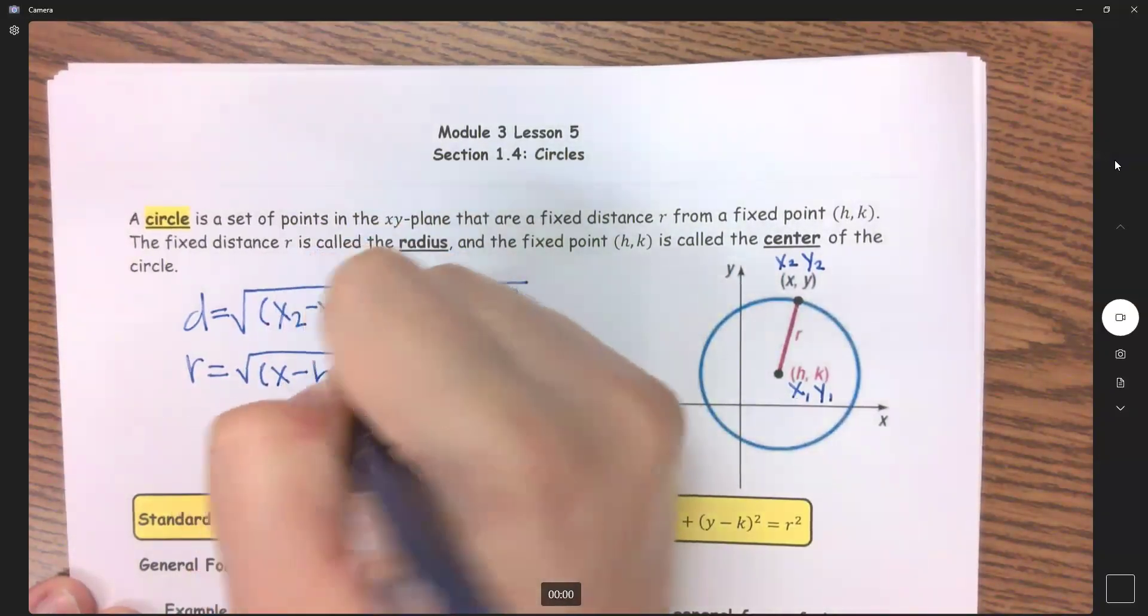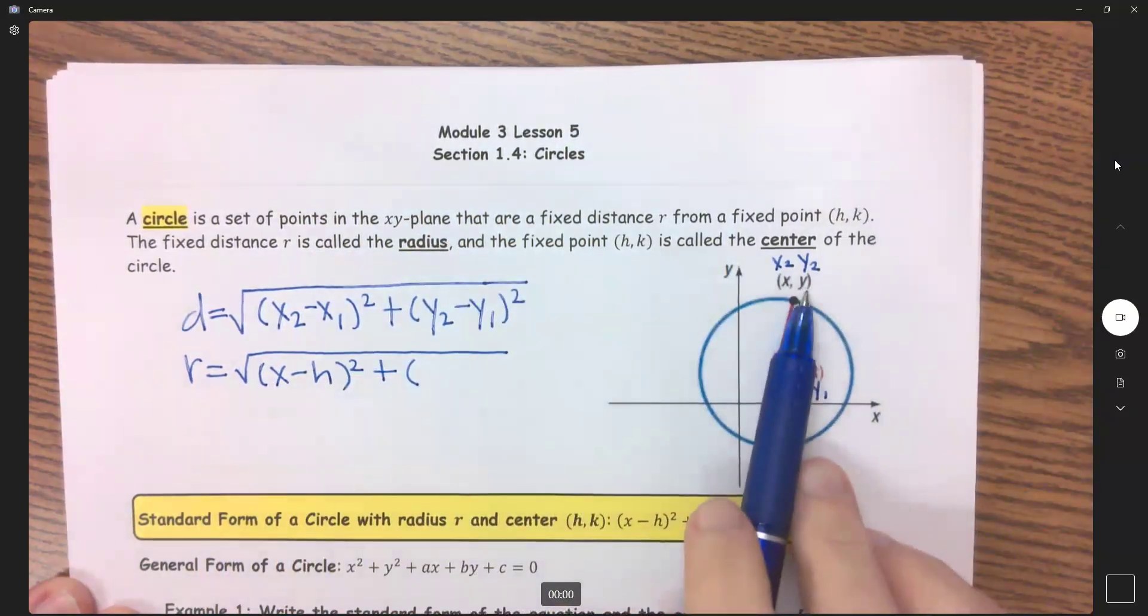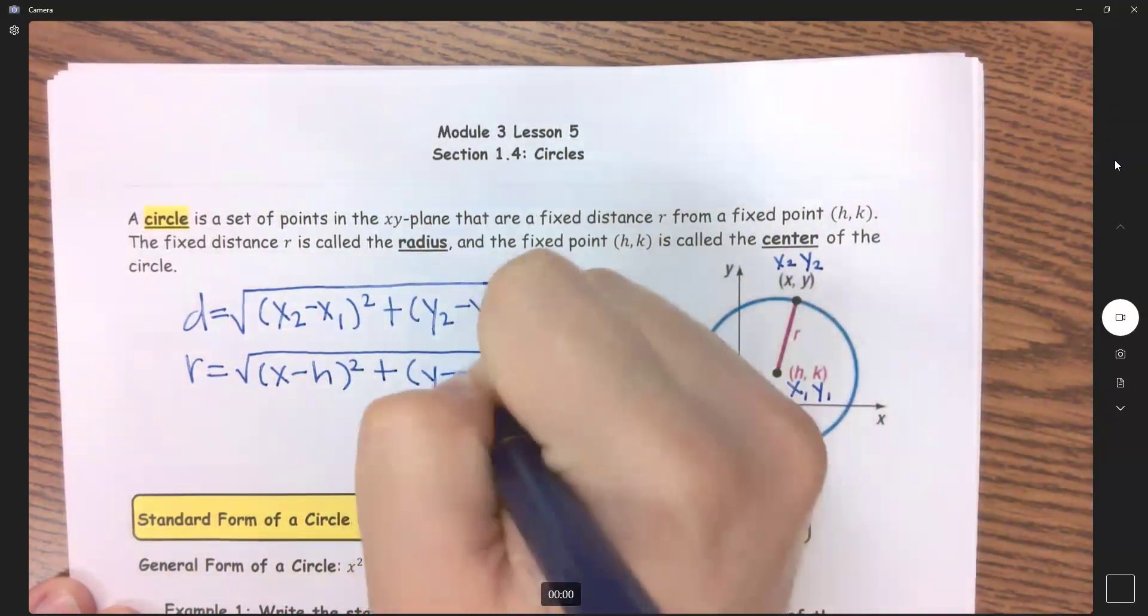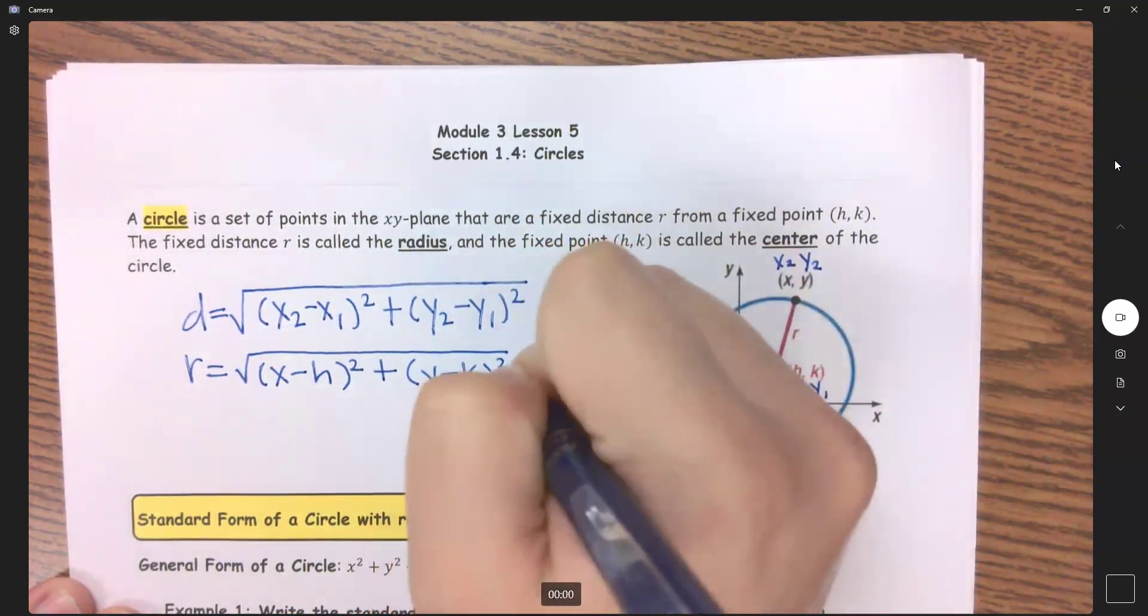x2 is x minus x1 which is h, plus y2 is y minus y1 which is k, squared.